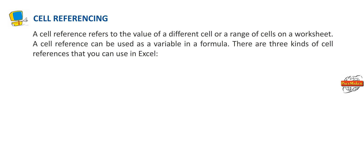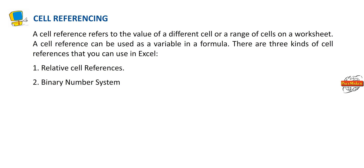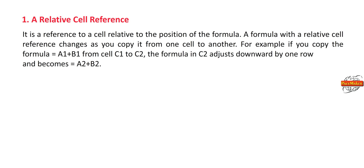Cell referencing: A cell reference refers to the value of a different cell or a range of cells on a worksheet. A cell reference can be used as a variable in a formula. There are three kinds of cell references you can use in Excel: relative cell references, absolute cell references, and mixed cell references. A relative cell reference is a reference to a cell relative to the position of the formula.